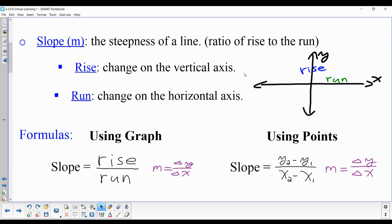The rise is the change in the vertical axis—positive when going up and negative when going down. The run is the change in the horizontal axis. Positive means going right, negative means going left.